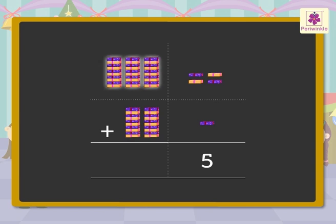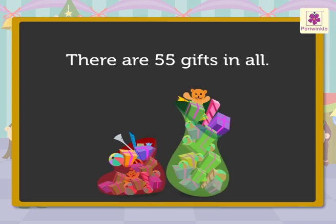And 3 tens plus 2 tens is equal to 5 tens. So, we get in all 5 tens and 5 ones, which means 55. Hence, there are 55 gifts in all.